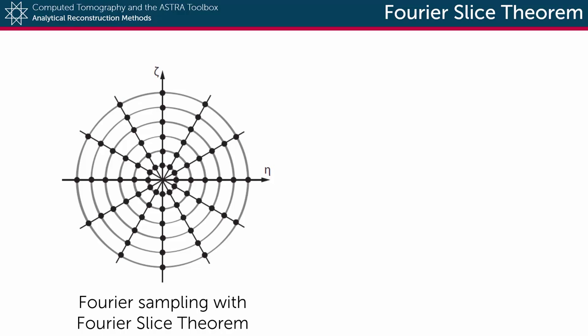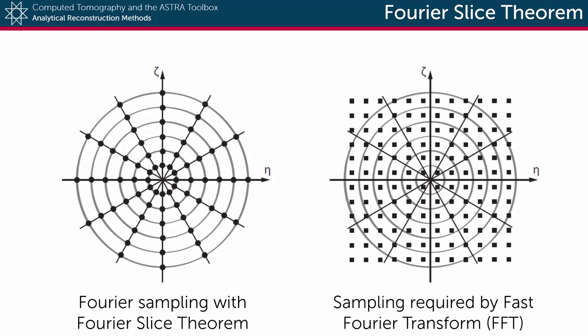One thing you'll note immediately is that the Fourier samples lie in circles rather than on a square grid, which is required for practical algorithms that perform the inverse transformation, such as the fast Fourier transform. This means that we'll have to apply interpolation in the Fourier domain, which is not necessarily something that we like to do.